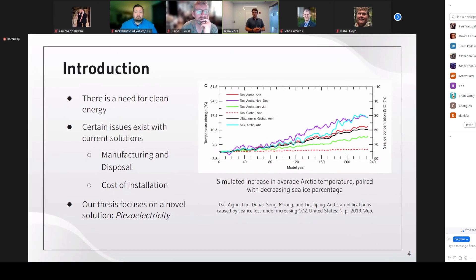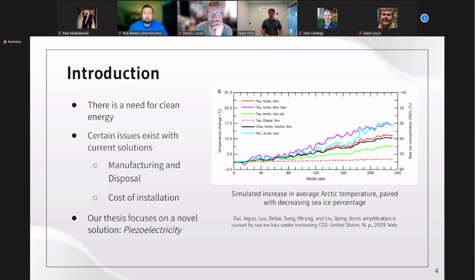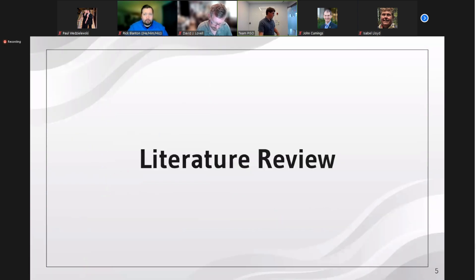For an introduction, recent years have brought a steadily growing demand for new sources of renewable energy, both to combat the continual rise of global warming, as demonstrated by the graph shown here, and to save the global hunger for electrical power in an increasingly modernized society. Current solutions to renewable energy, while massive improvements to their fossil fuel predecessors, still come with significant drawbacks. The production and disposal for solar and wind power generators create environmentally hazardous byproducts, and the cost of such installations, while steadily decreasing, is still sizable.